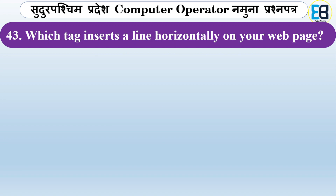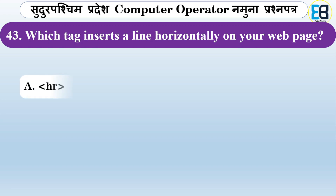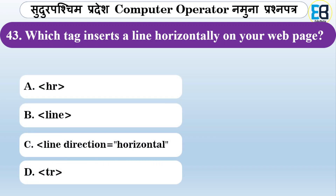Which HTML tag is used to insert a horizontal line on a web page? The correct tag for inserting a horizontal line is the HR tag — it creates a horizontal rule across the page.